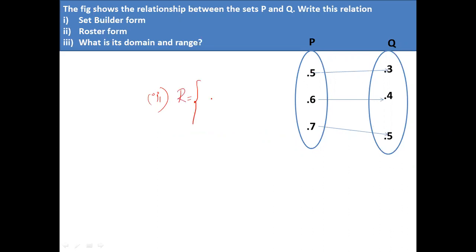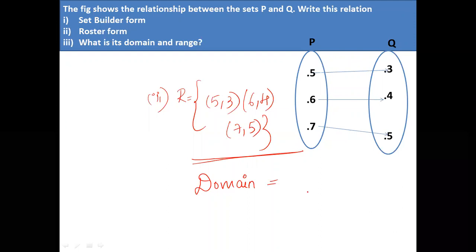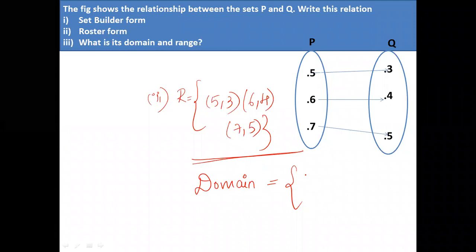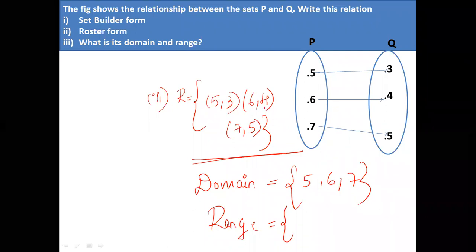What are the elements in this relation? 5 is related to 3, so (5, 3). Then (6, 4) since 6 is related to 4. And (7, 5) since 7 is related to 5. So this is the answer for the roster form — you are listing out the elements. In set builder form you write a common property of the elements. What is the domain? The domain is {5, 6, 7} — set of all first elements. What is the range? Range is {3, 4, 5} — set of all second elements.